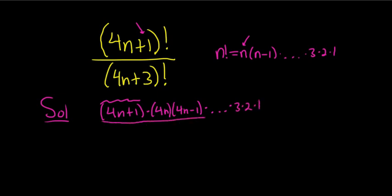On the bottom, it's the same, except you start with 4n plus 3. So 4n plus 3. Then you subtract 1, so 4n plus 2. Then you subtract 1, so 4n plus 1. Then you subtract 1, so it's 4n, and then 4n minus 1, et cetera.